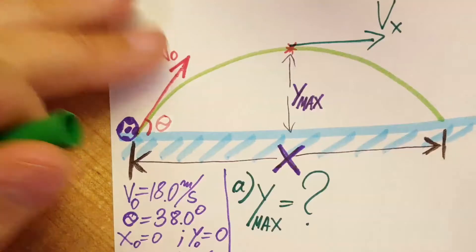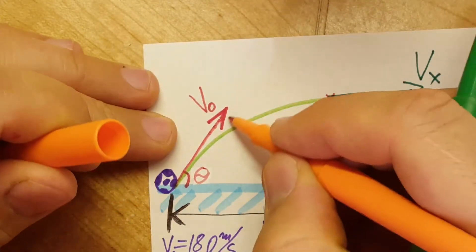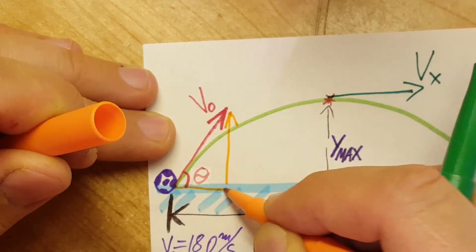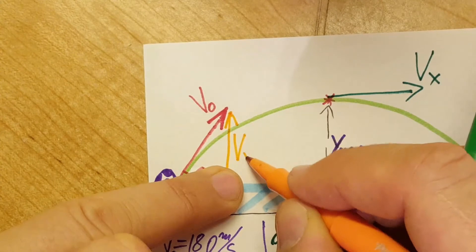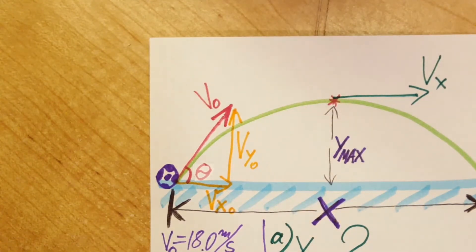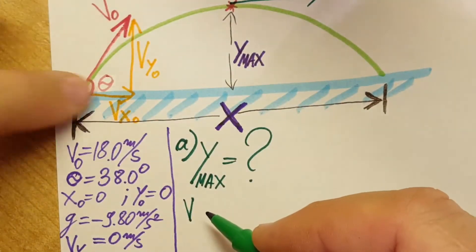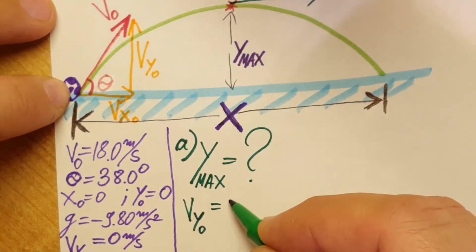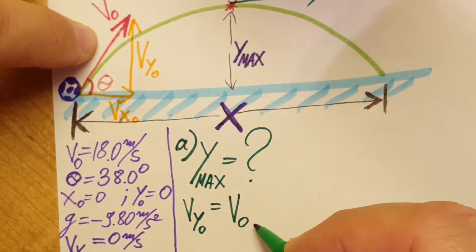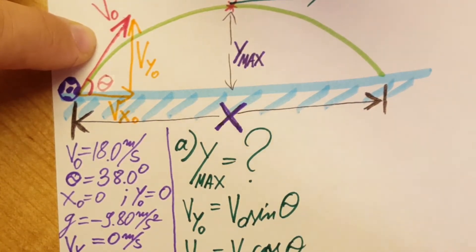First we're gonna go ahead and break this triangle up into its components so therefore we can find v_y_naught and down here v_x_naught, and these two items are gonna help us finding our other values. So v_y_naught will be equal, from this triangle we can see that v_naught sine theta, and v_x_naught will be equal to v_naught cosine theta.